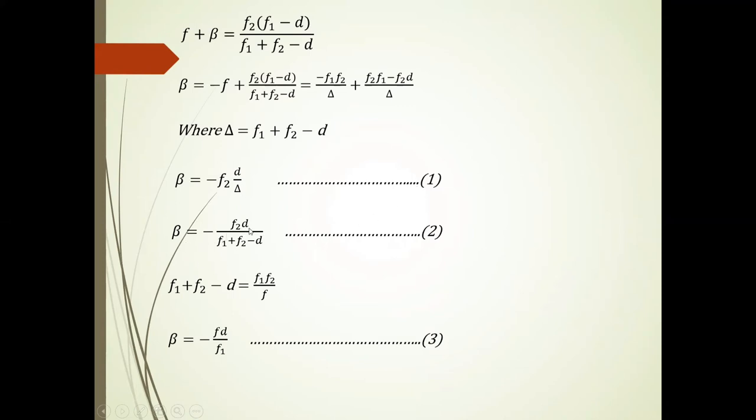So beta is equal to minus F2 into D upon delta. Delta is equal to F1 plus F2 minus D. So using this, you get beta is equal to minus D upon F1. Equation 3.